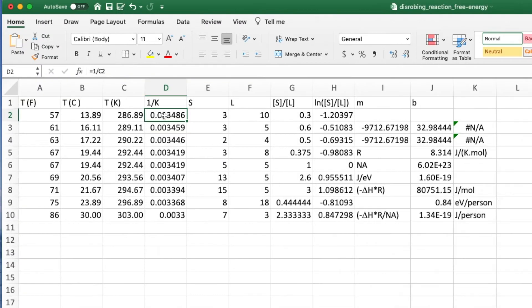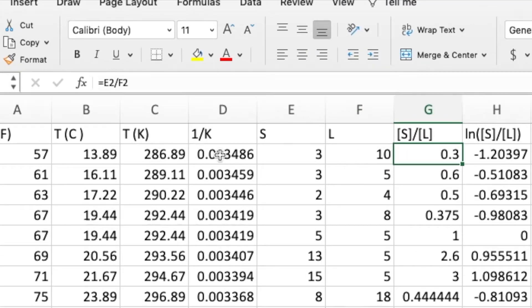Next, enter the data. In column E, I've entered the number of people wearing shorts at each temperature. In column F, I've entered the number of people dressed in long pants at each temperature. Column G computes the equilibrium constant. Selecting cell G2 shows the formula.